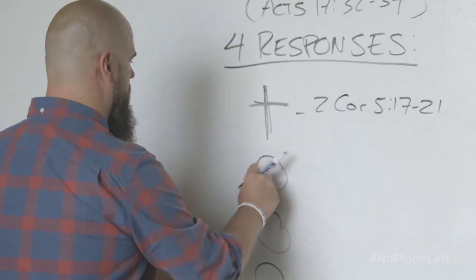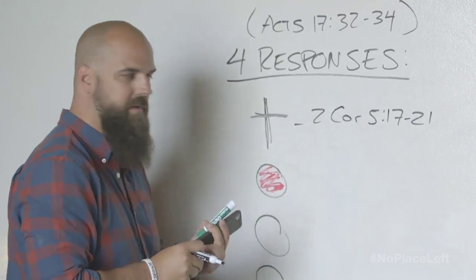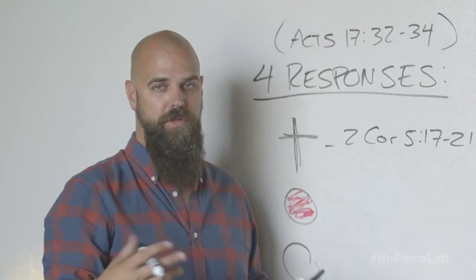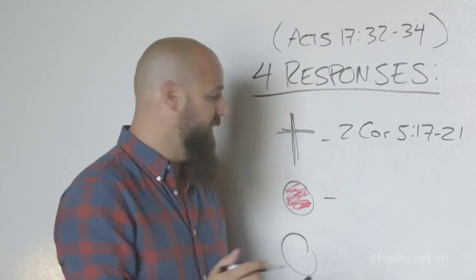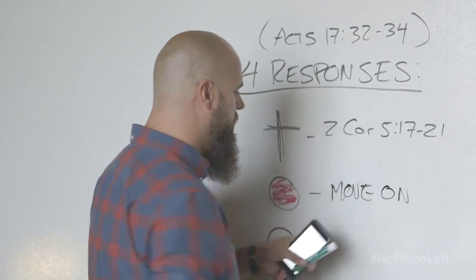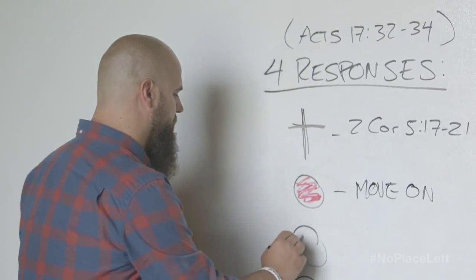The second group of people are what we call red light people, and those are people who are just not interested. They could pleasantly be uninterested or they could rudely be uninterested, but they do not want to follow Jesus. So you kindly move on, love them, pray for them, but move on because you're looking for that person of peace.